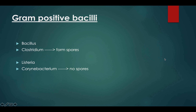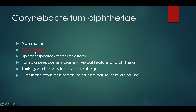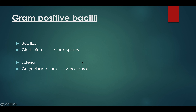Gram positive bacilli — bacilli are rod-shaped organisms. There are basically four of these which you need to remember, and especially these three which are really important for the test: Bacillus, Clostridium, Listeria, and Corynebacterium. Just remember: Bacillus and Clostridium are the spore-forming bacilli, and the other two are non-spore forming.